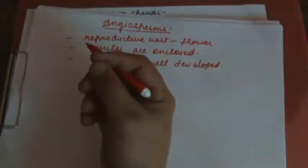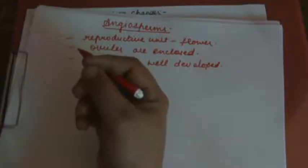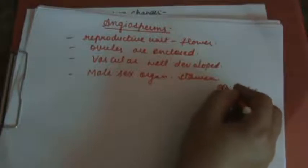For reproduction, male sex gametes are formed in male sex organs known as stamens. Each stamen has two parts: a filament and an anther. Spores known as pollen grains are formed within the anther and act as the male sex organs.